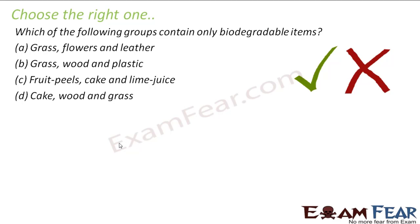Choose the right one: which of the following groups contain only biodegradable items? Biodegradable means those things which can be decomposed by living organisms. Option A: grass, flowers, leather — leather is not biodegradable, so incorrect. Option B: grass, wood, plastic — plastic is not biodegradable, so incorrect. Option C: fruit peels, cake, lime juice — all biodegradable. Option D: cake, wood, and grass — also all biodegradable. So C and D are both correct.